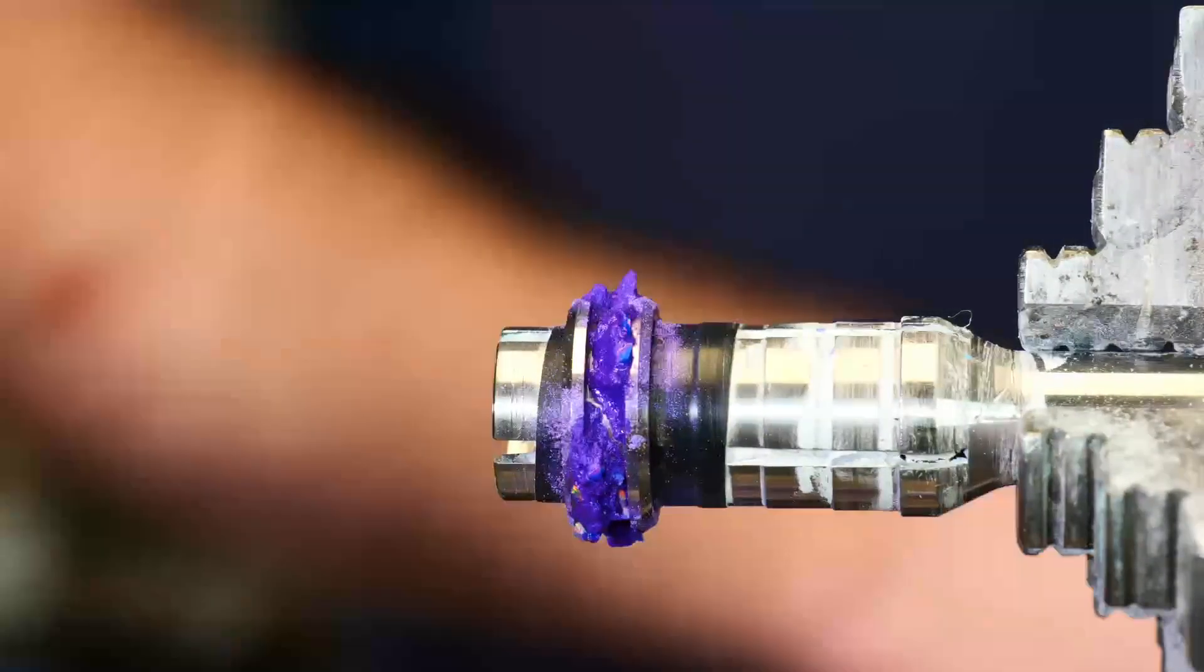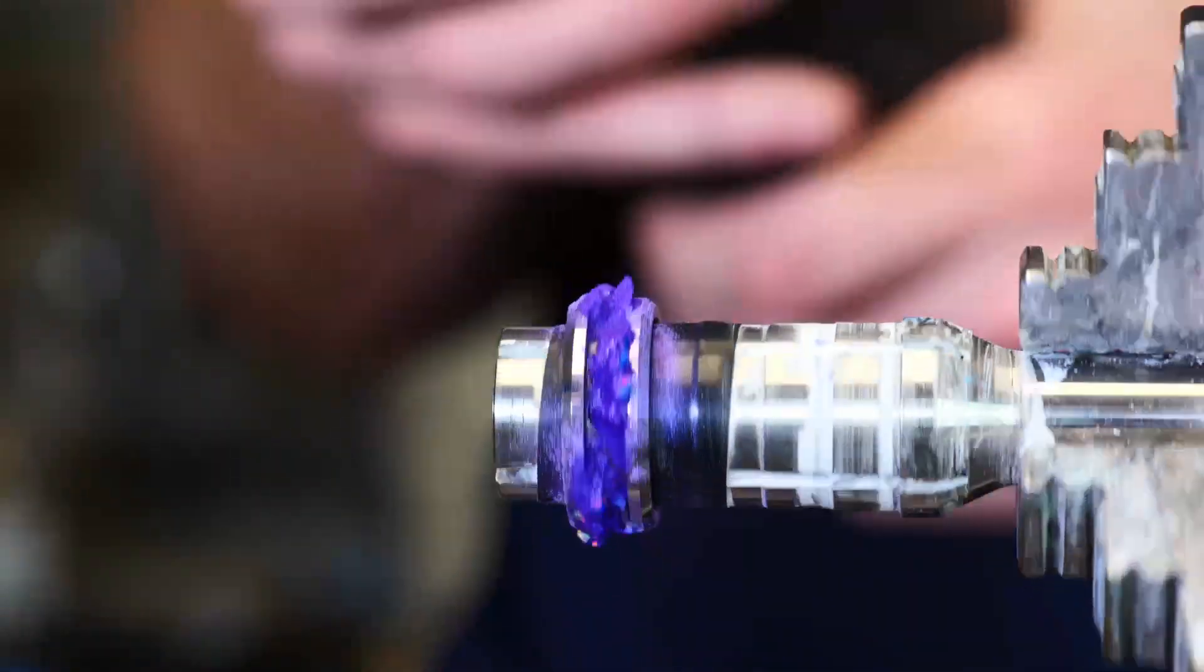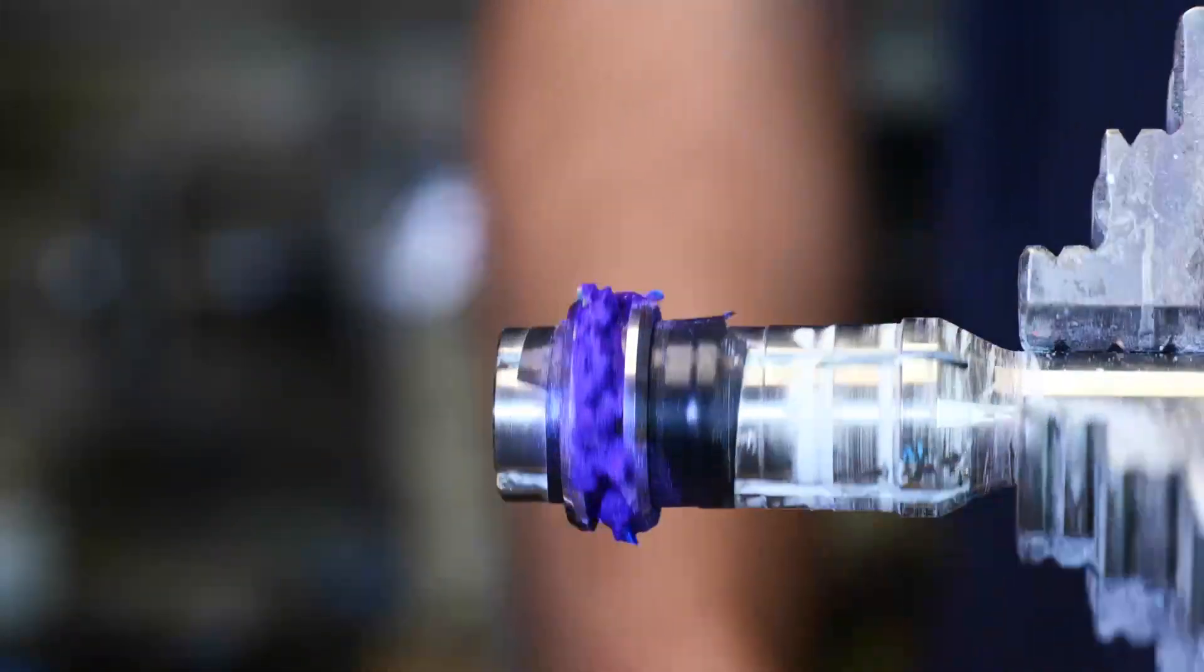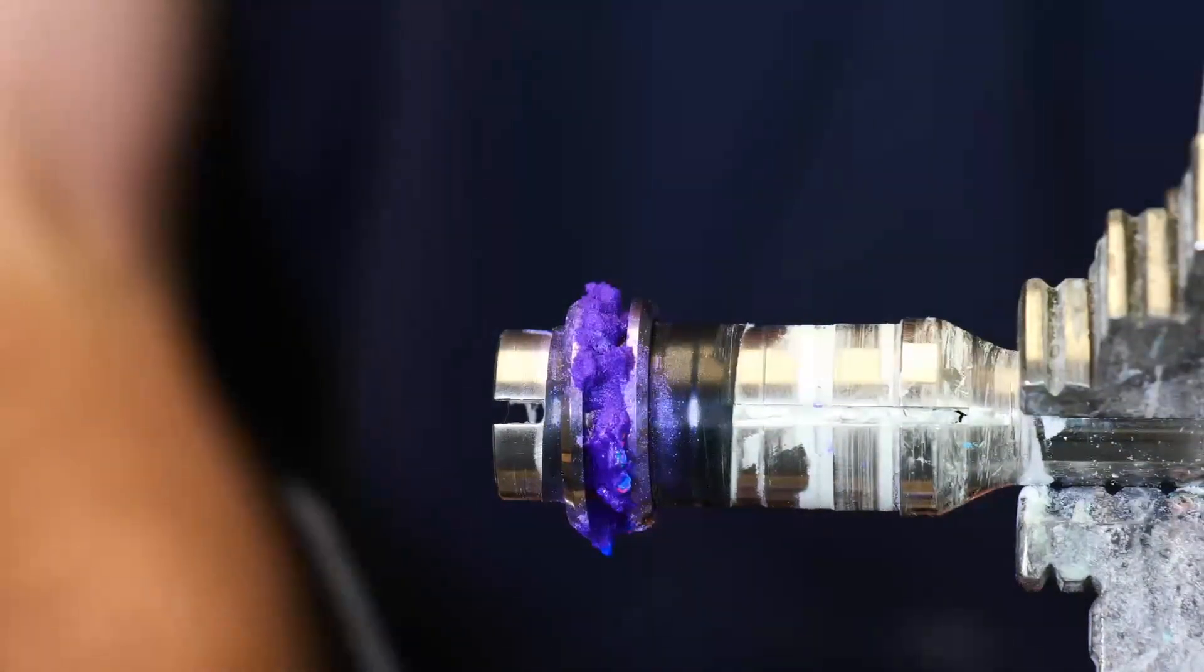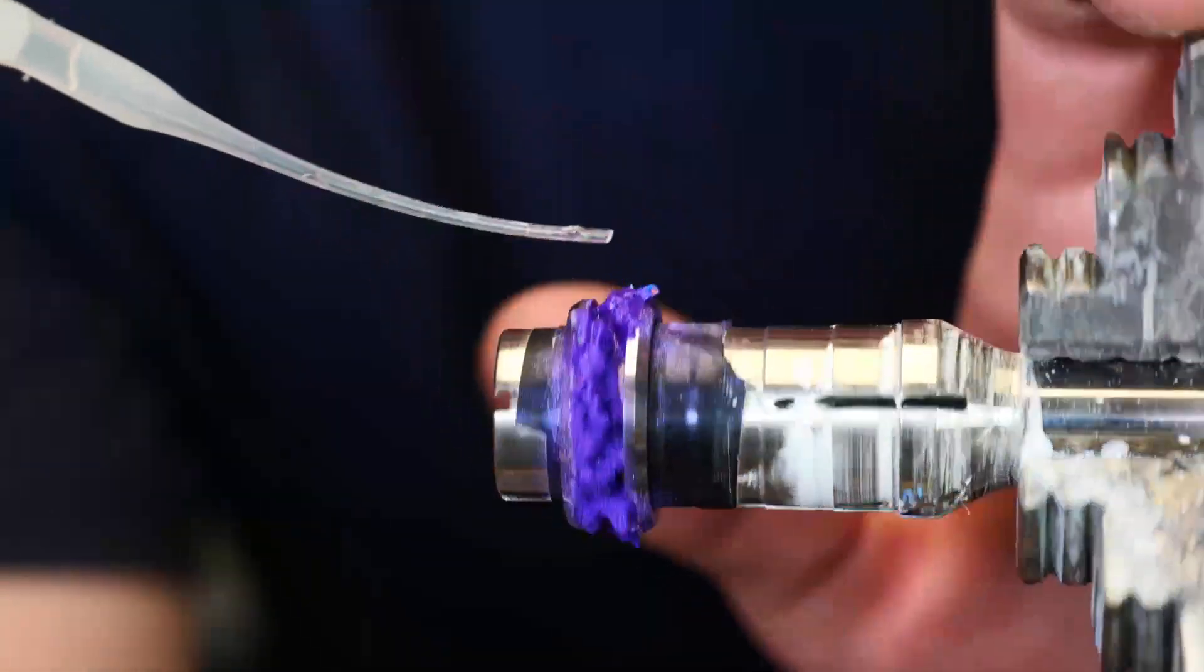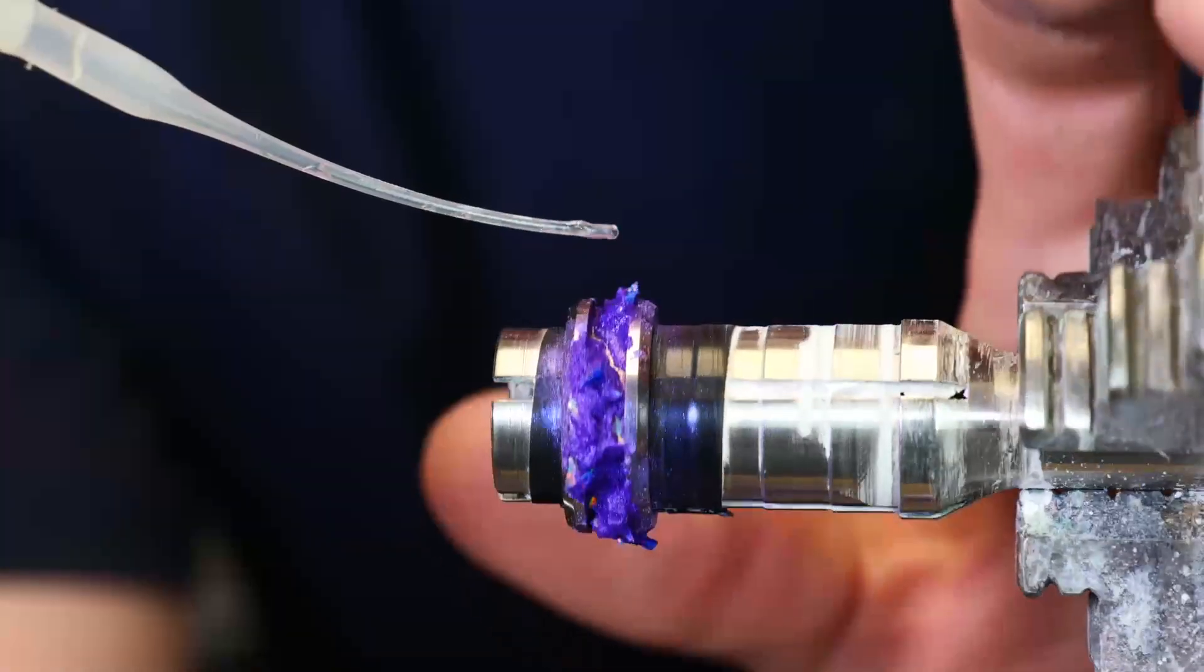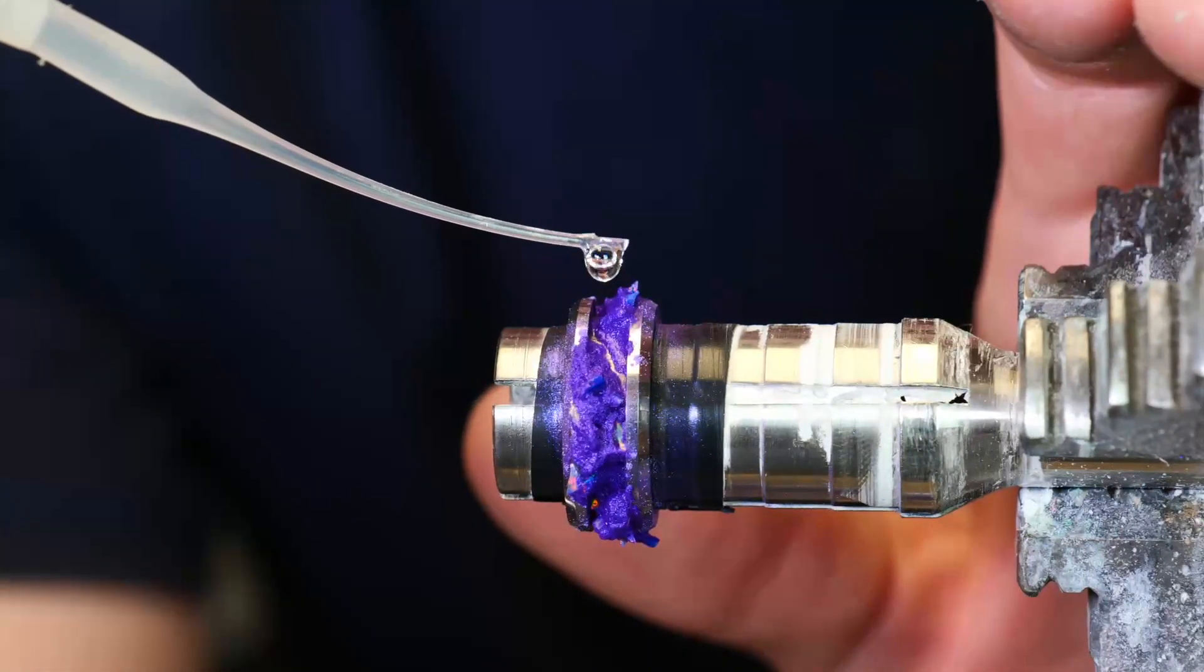After we've filled it all the way up, we're going to go ahead and hit it with our accelerator just to start the curing process. You could leave it be, just let it spin for a little while or let it sit, but I like to use the accelerator just because I'm not a very patient person. I like to just finish the ring as soon as I can so I can see what my creation looks like. So I hit it with accelerator, let it sit for 10 to 15 minutes and then we come back for our finishing steps.